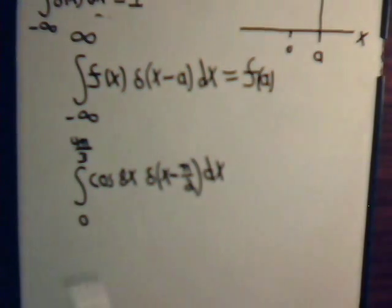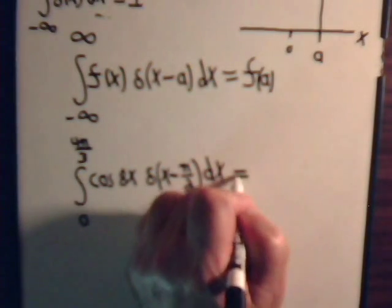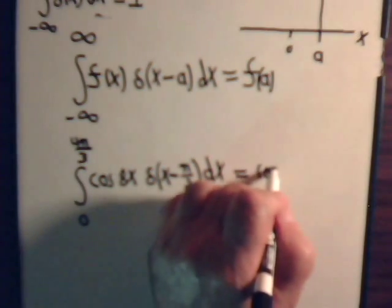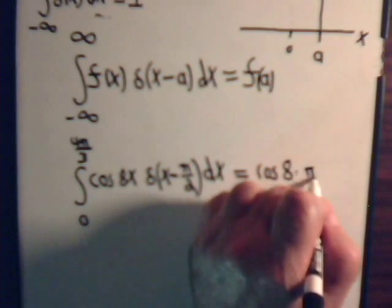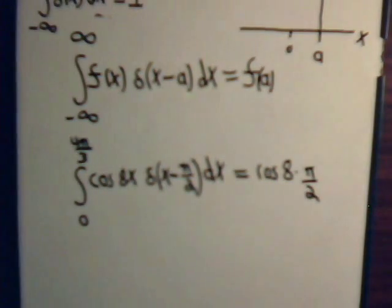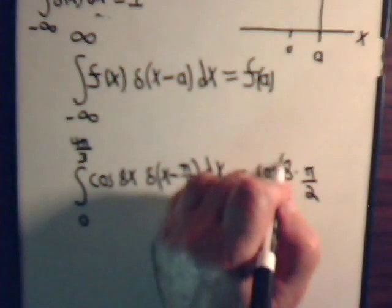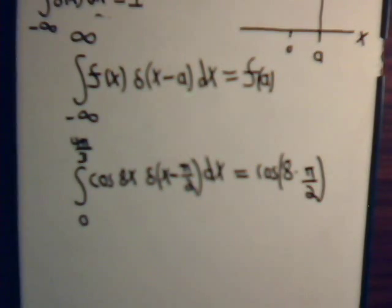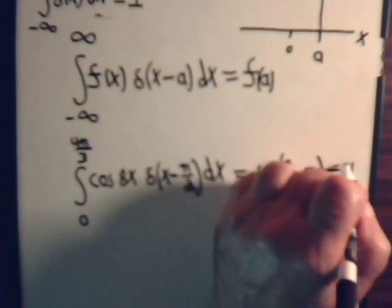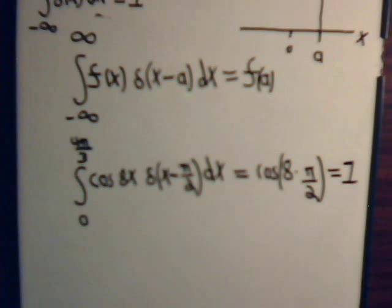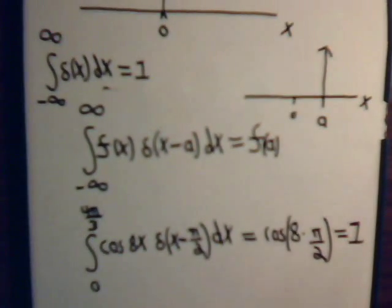So, x will be pi over 2. So, this would be the cosine of 8 pi over 2, or that's the cosine of 4 pi, which equals 1. And again, this is just a specific demonstration of this relationship here.